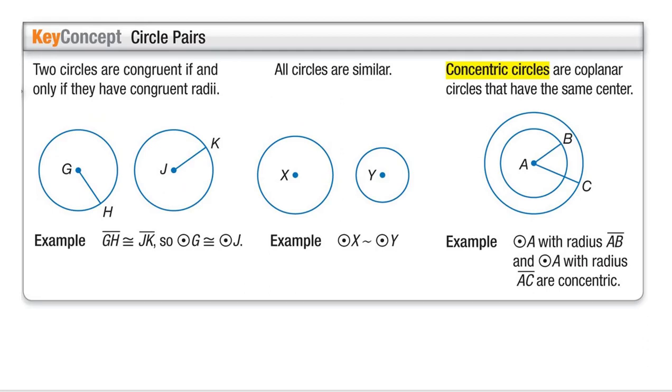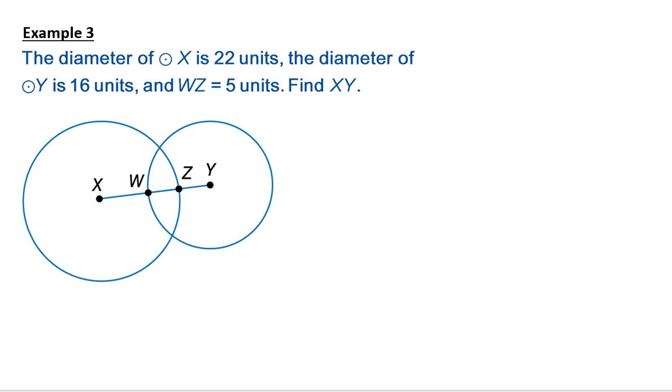Two circles are congruent if they have congruent radii. All circles are similar because just of how they are. Concentric circles are coplanar circles with the same center. So meaning that they have the same center here. So just some fun different things. Concentric circles. I think of the target symbol or a bullseye. All of those are concentric circles.